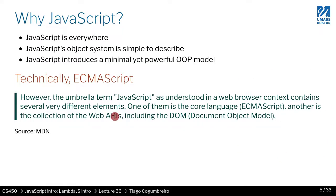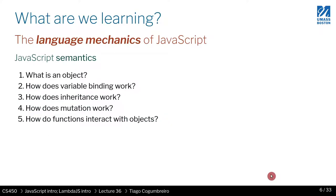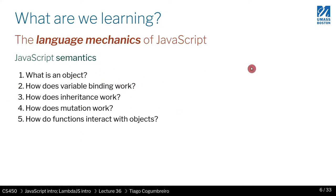What are we learning? We are learning what is an object. We're still following the theme — we're going to focus on the semantics, which is another way to say how does it run, and how do you implement its execution. We're going to focus on answering these five questions: What is an object? How does variable binding work? How does inheritance work in this programming language? How does mutation work? And finally, how do functions interact with objects? These are the main questions we're going to try to answer throughout these last three lessons.